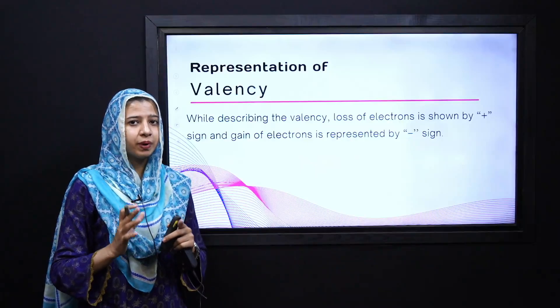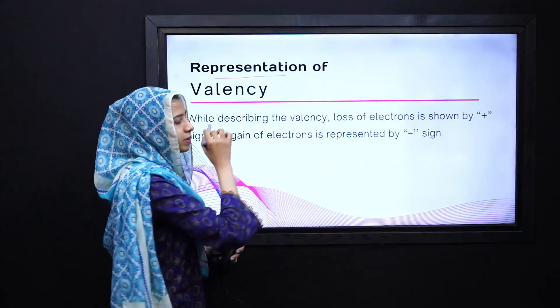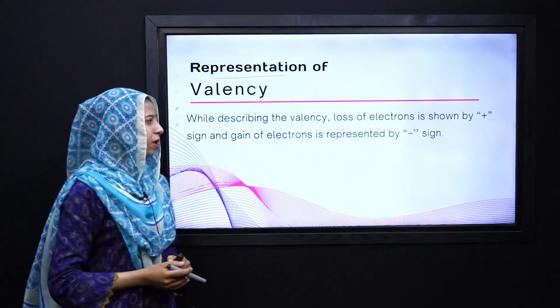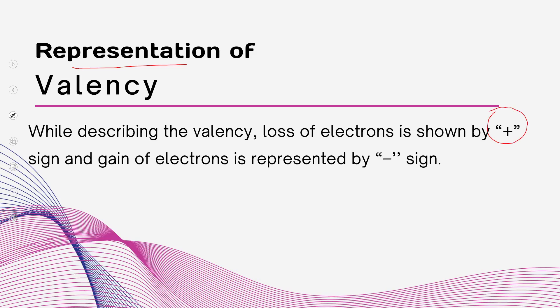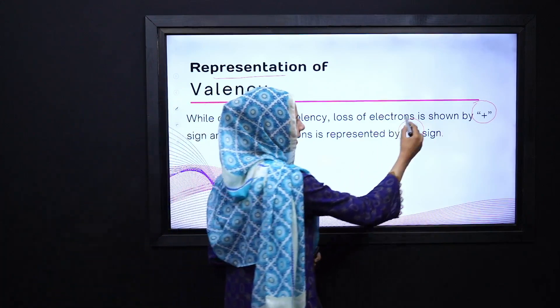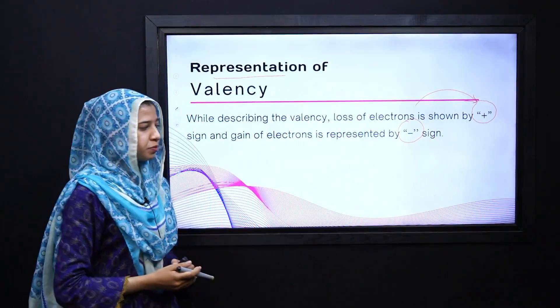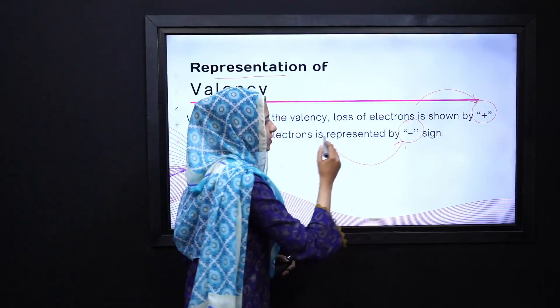Ek simulation ki madad se hum is concept ko samjhenge, but before starting the simulation hum dekhenge ke valency ko hum represent kis tarah karte hain. Yaad rakhiye ke humare paas do signs ka istemal karte hain: the first sign is positive, whereas the second sign is negative. Aisa atom jo electron ko donate karega wo positive sign lega, aur aisa atom jo electrons ko accept karega usko hum represent karenge negative sign ki madad se.